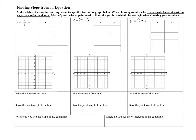Now when you pick values for X for all of these, I want you to make sure that you have at least one positive, at least one negative, and throw in zero. For this very first one, I want you to pay attention to what you are putting in for X. If I'm going to graph these when I'm done, it's really nice to have integers as my solution.